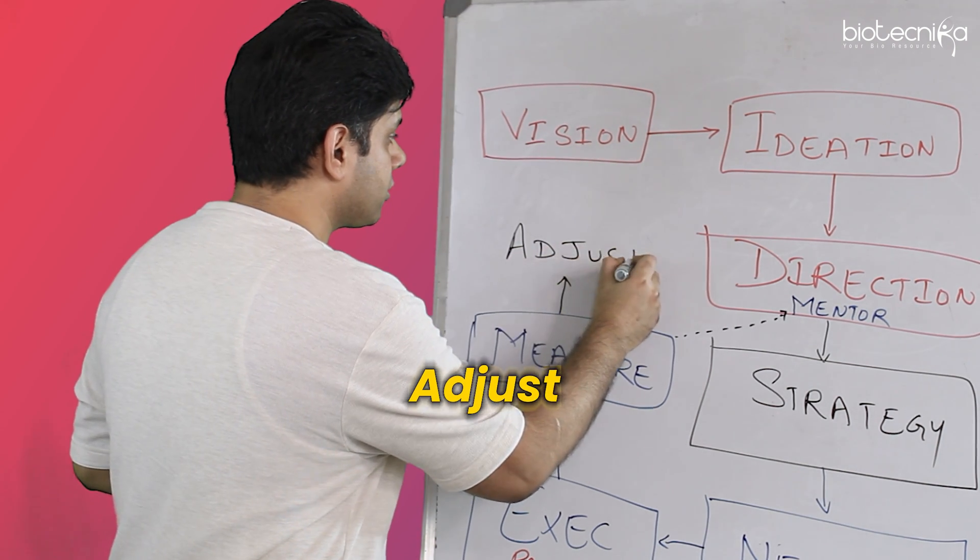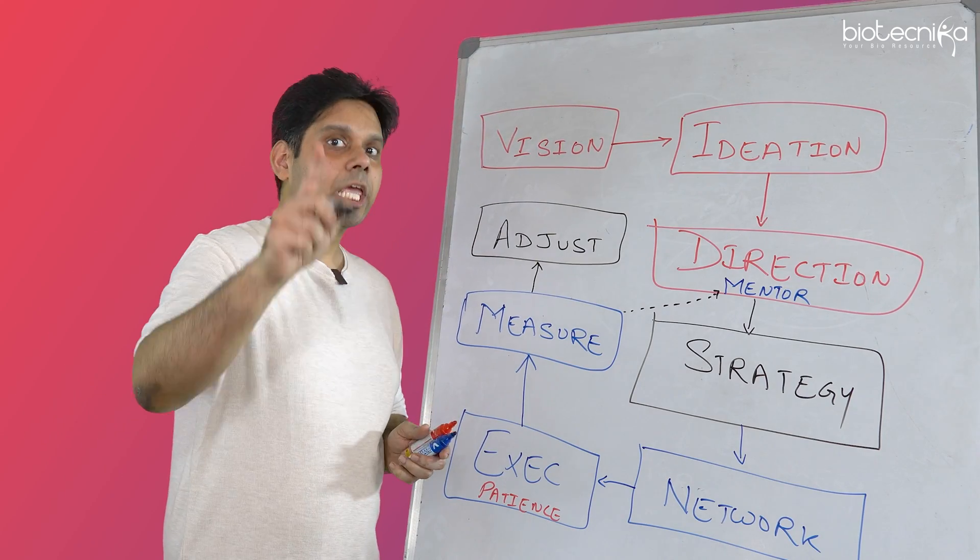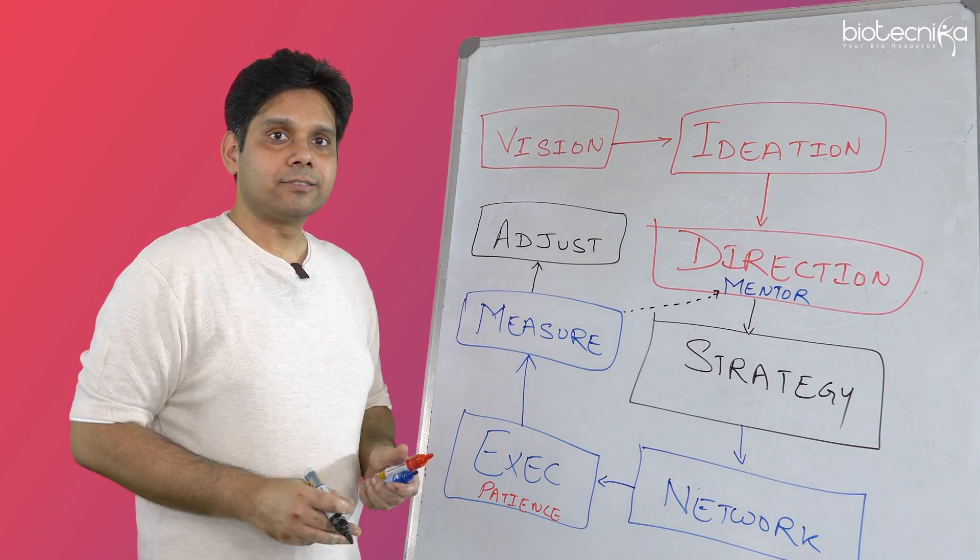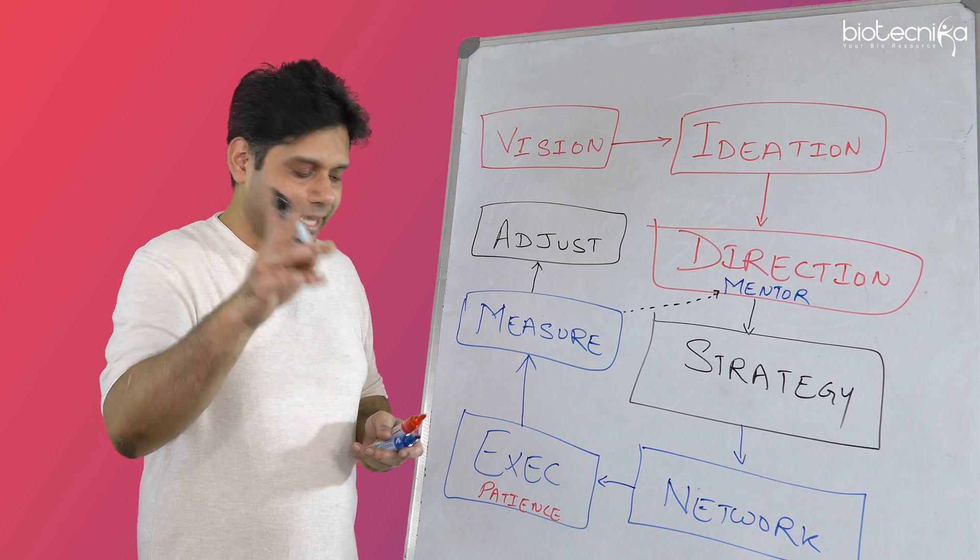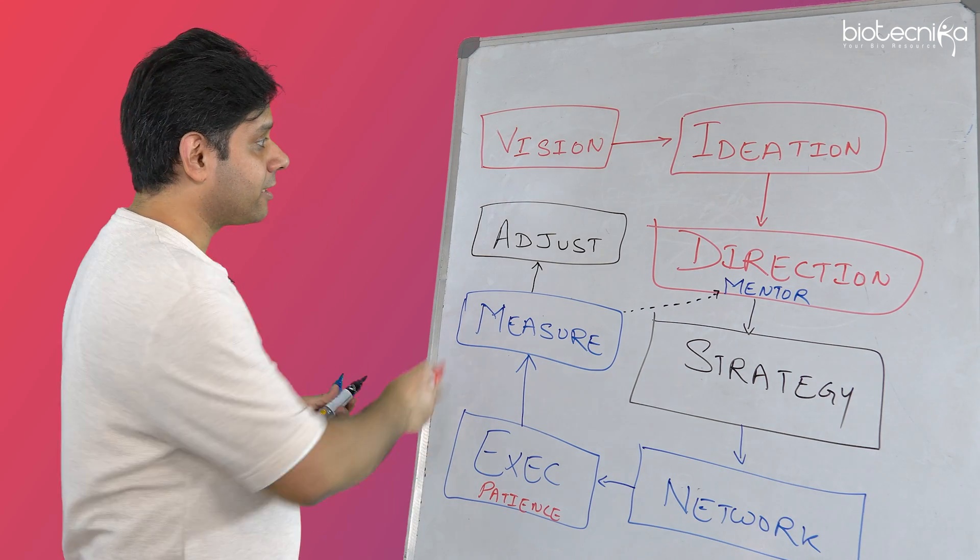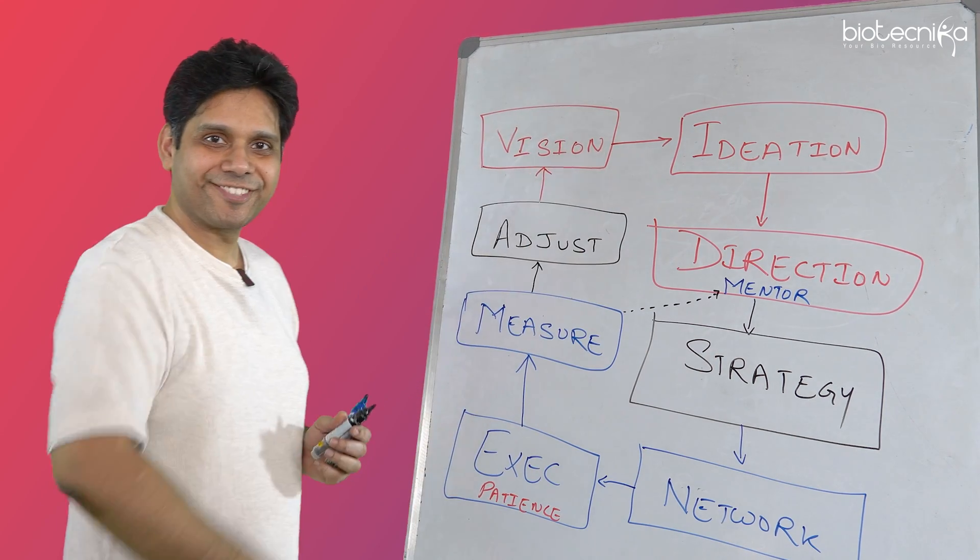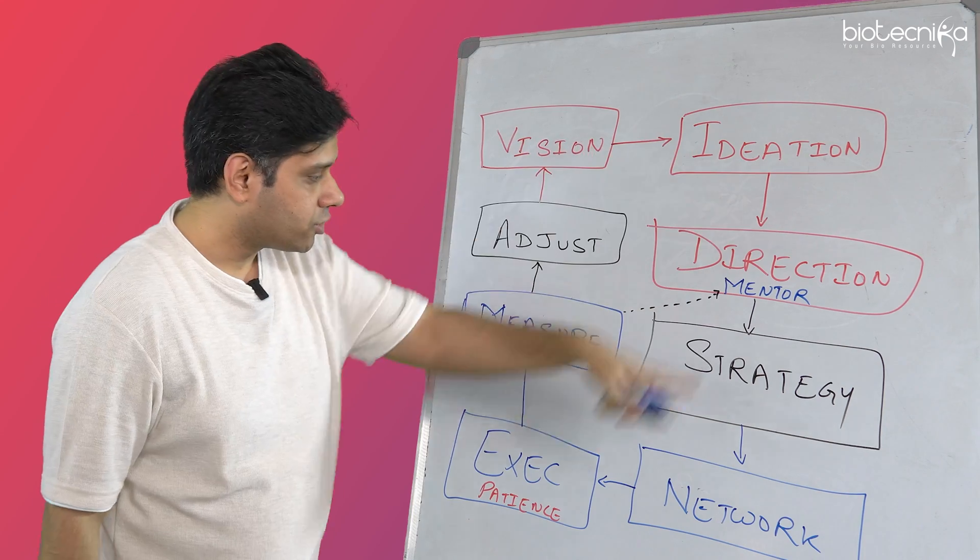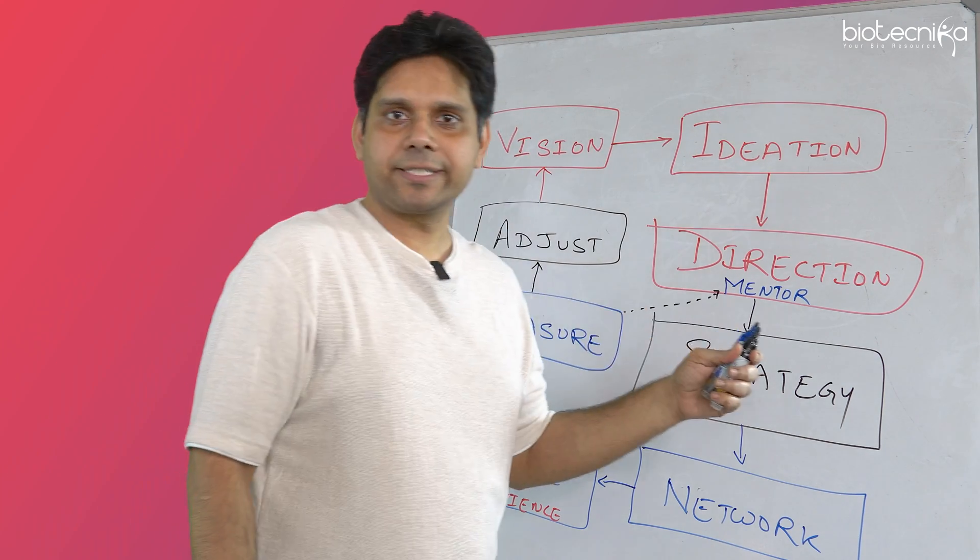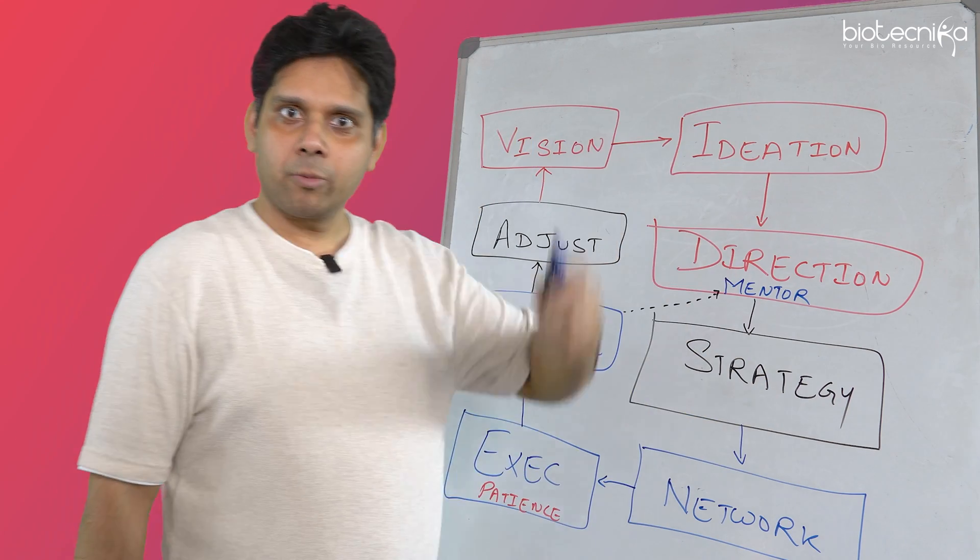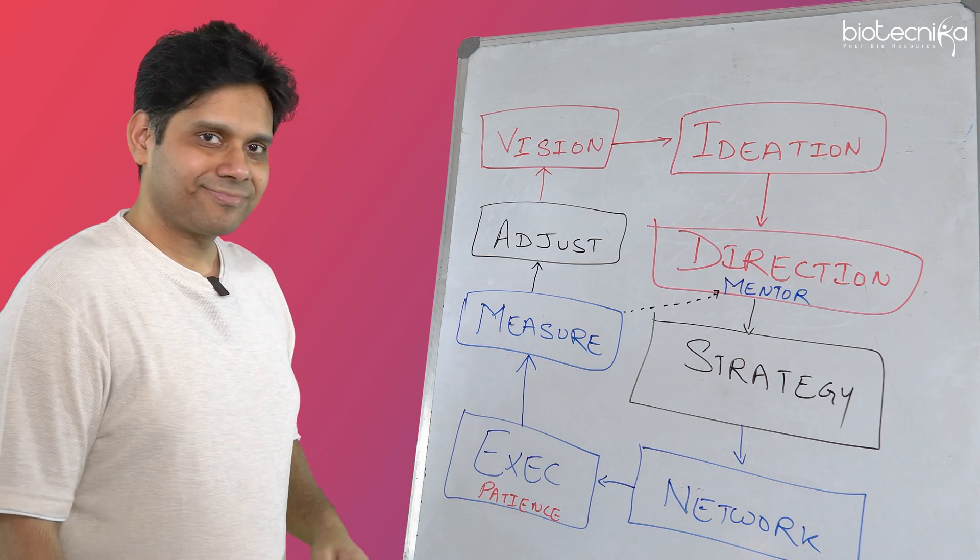Remember the Charles Darwin theory? What it says? It says that the species which adapt to change are the ones who will survive. And that is how, my dear friend, see, life is a full circle. We have come back and we will achieve our vision. So, that is how you achieve your vision. There is no shortcut to your vision. There is nothing like, okay, I want to become a chief scientific officer of XYZ company. Or I want to start a biotech company. Or I want to have an eight-figure salary in dollars in US.